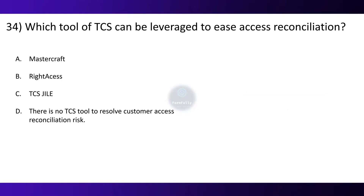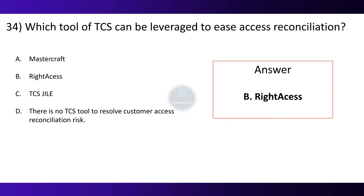Question 34. Which tool of TCS can be leveraged to ease access reconciliation? Option A: Master Craft. Option B: Right Access. Option C: TCS Delay. Option D: There is no TCS tool to resolve customer access reconciliation risk. The correct option is B, Right Access.